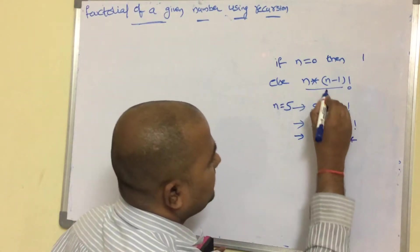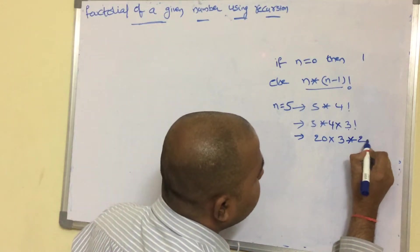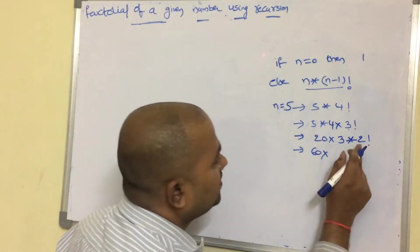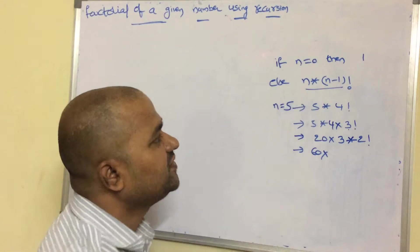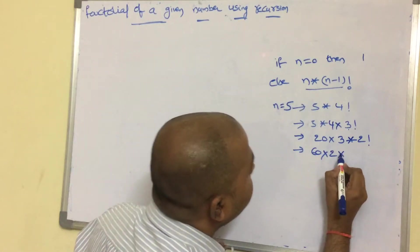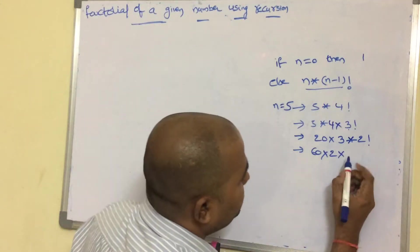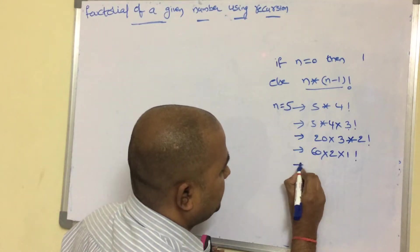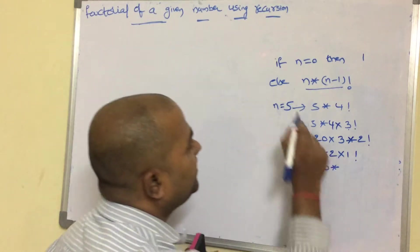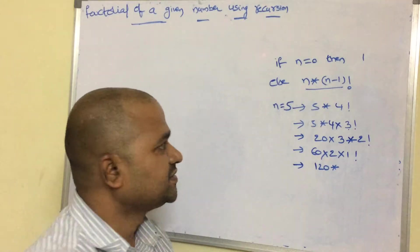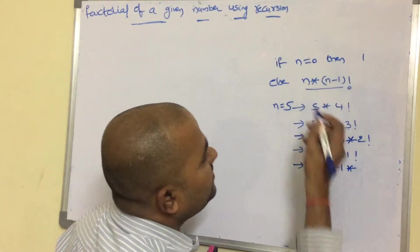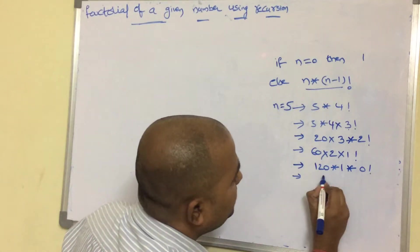Now n value is 3; 3 is equal to 0 is false, so this block will be executed: 3 into 2 factorial. Next, n value is 2; 2 is equal to 0 is false, so this block will be executed: 2 into 1 factorial. Then n value is 1; 1 is equal to 0 is false, so the else block executes: 1 into 0 factorial.